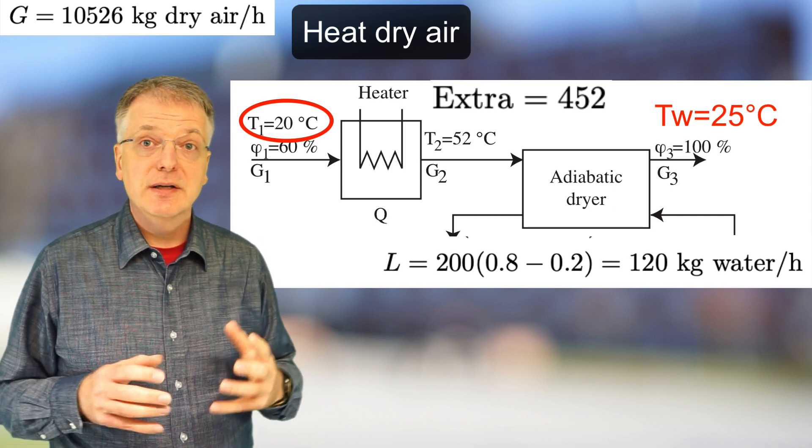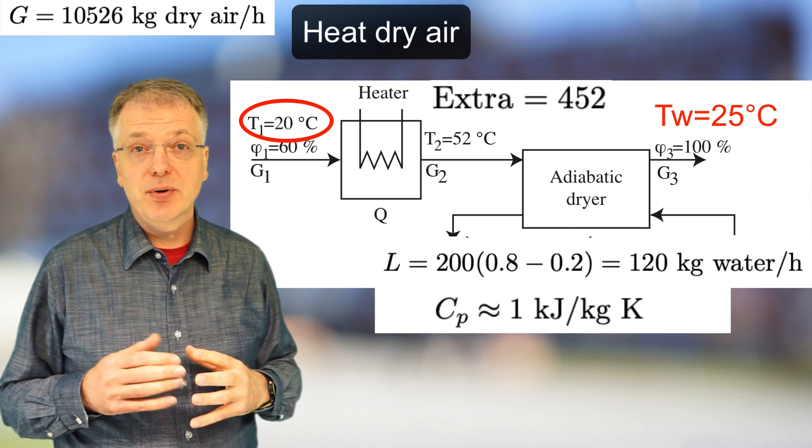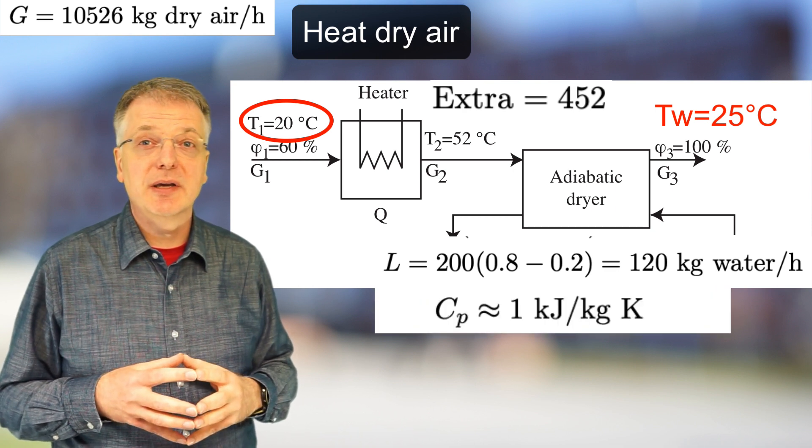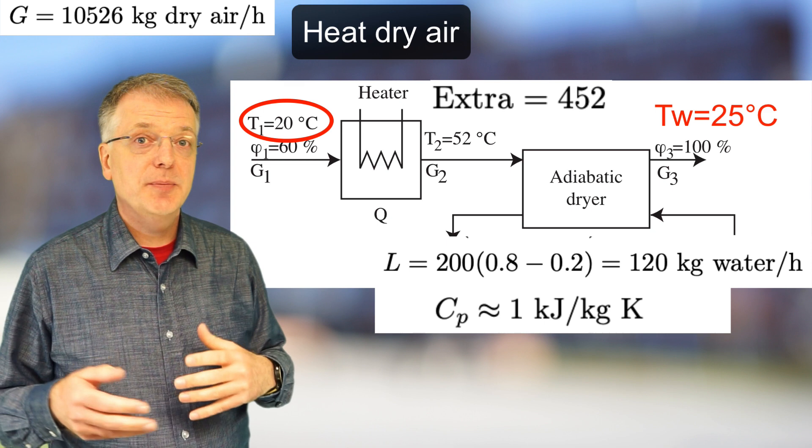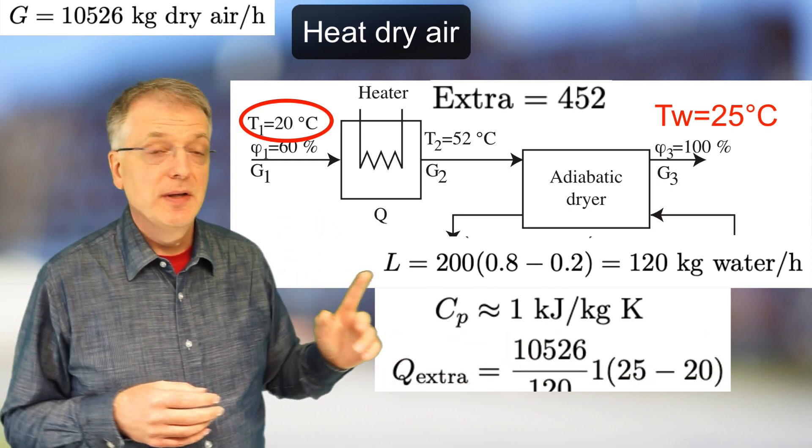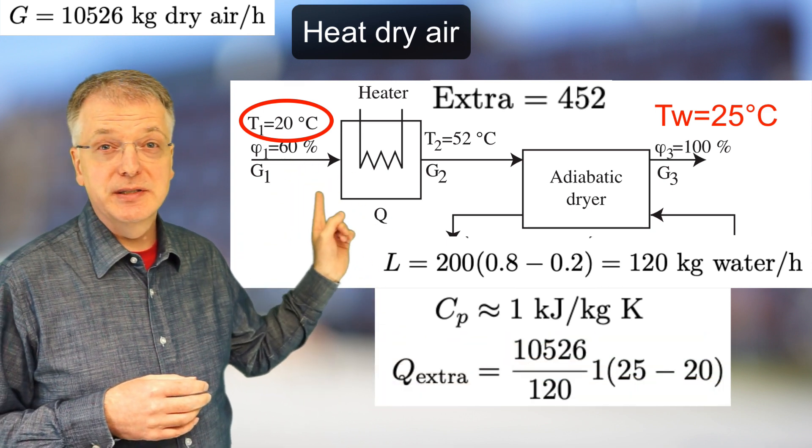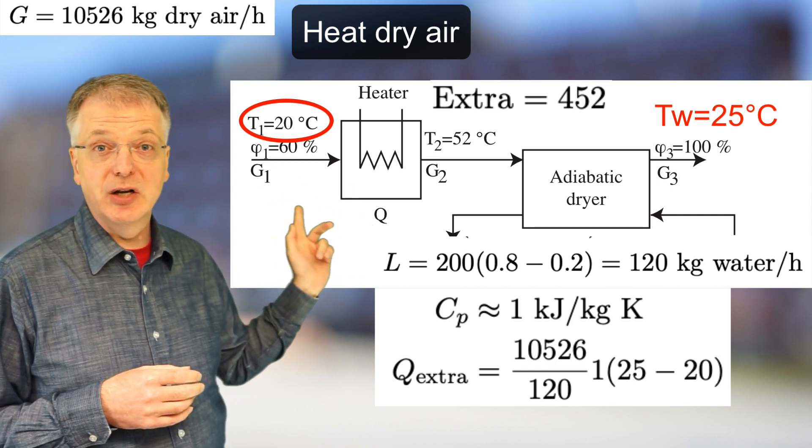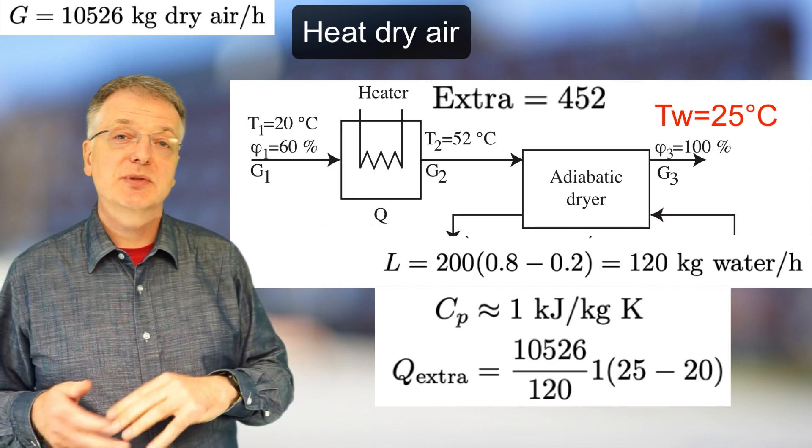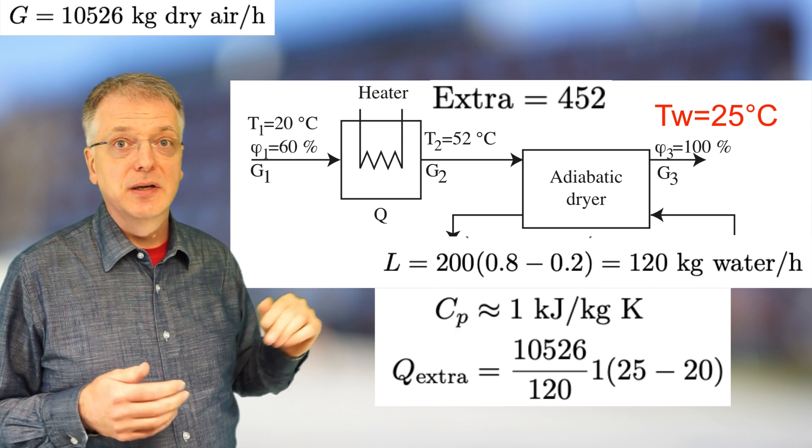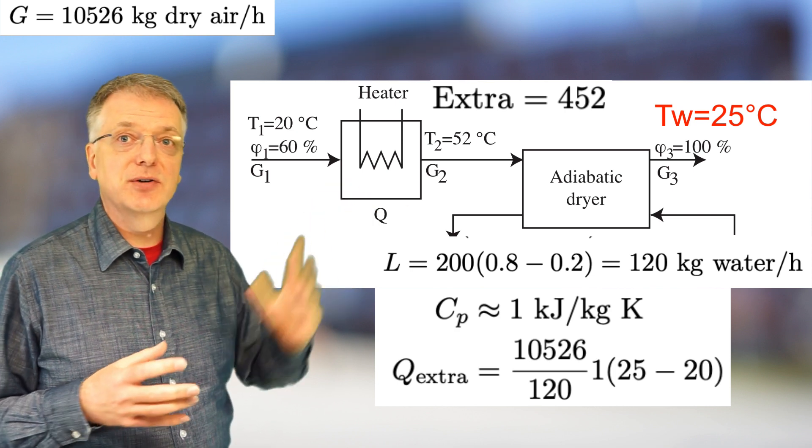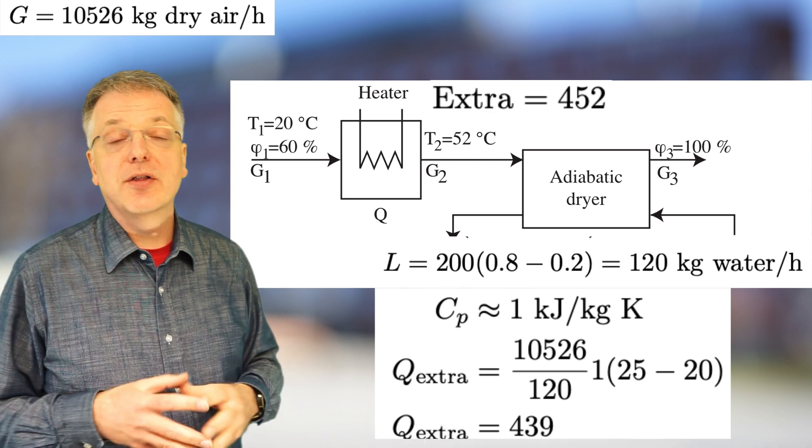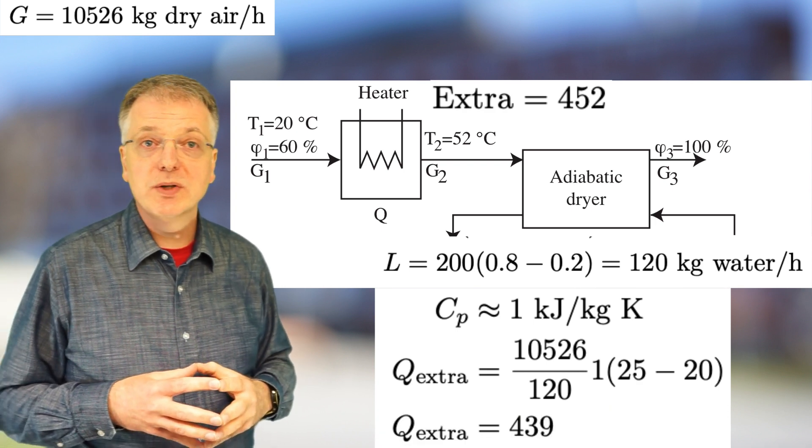The heat capacity of air in this temperature range is approximately 1 kilojoule per kilogram in Kelvin, and we get per kilogram of water evaporated, 10,526 kilogram of dry air per hour divided with 120 kilogram of water per hour times 1 kilojoule per kilogram in Kelvin times 5 degrees Celsius or 439 kilojoules per kilogram of water.